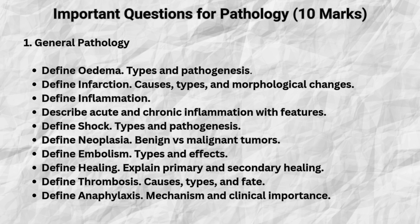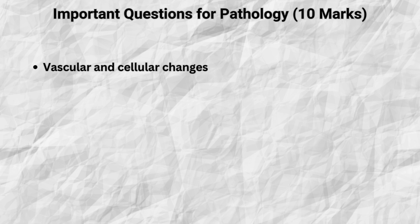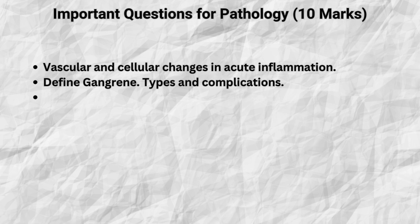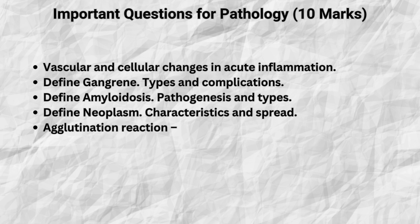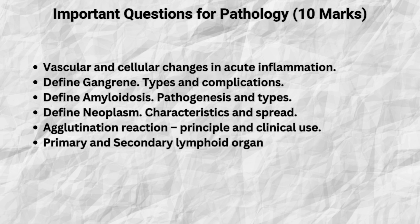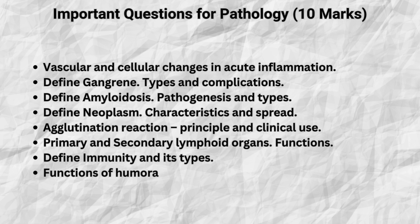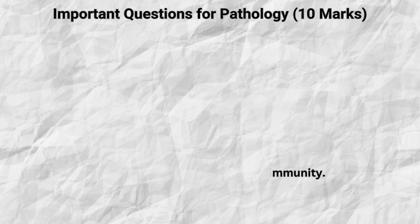Define thrombosis, causes, types and fate. Define anaphylaxis, mechanism and clinical relevance. Describe vascular and cellular changes in acute inflammation. Define gangrene, types and complications. Define amyloidosis, pathogenesis and types. Characteristics and spread of neoplasms. Principle and clinical application of agglutination reaction. Functions of primary and secondary lymphoid organs, define immunity and its types. Functions of humoral and cell-mediated immunity.